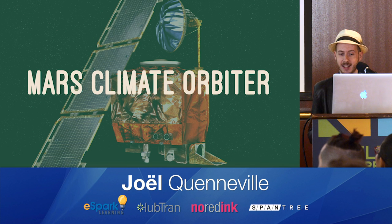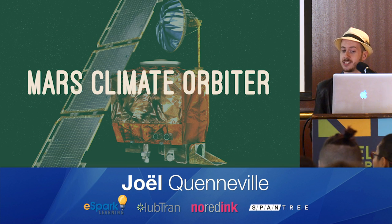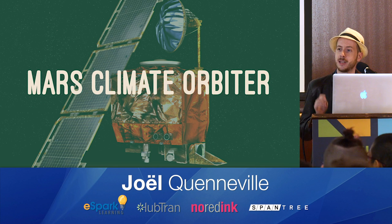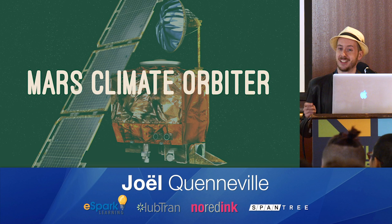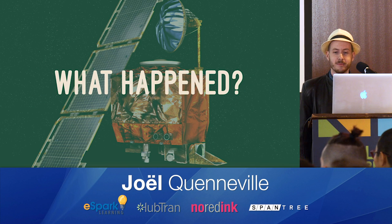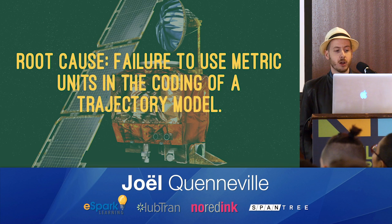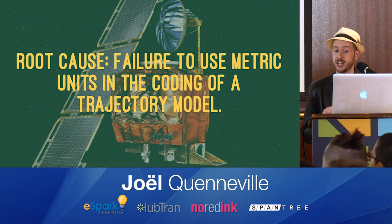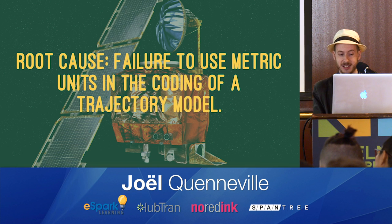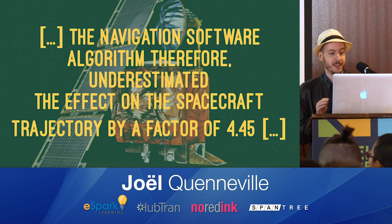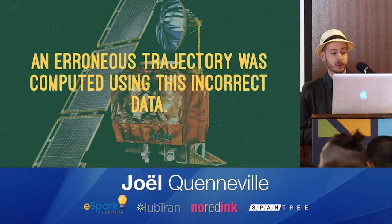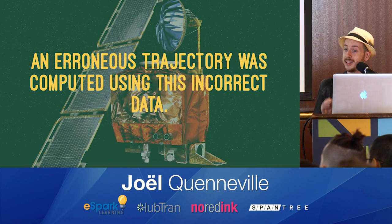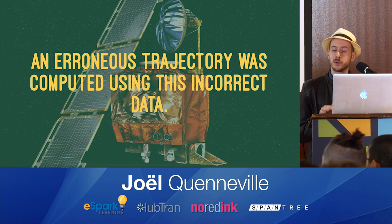So in September of 1999, the Mars Climate Orbiter completed its 266-day journey to Mars. And when I say completed, I mean it crashed into the Martian surface and burned up. We lost a $300 million project and several years of development gone. So what happened? According to the investigation report, the root cause was a failure to use metric units in the coding of a trajectory model. Every other subsystem in this project used metric, but the trajectory calculator used American units. The navigation software algorithm therefore underestimated the effect of the spacecraft trajectory by a factor of 4.45. An erroneous trajectory was computed using this incorrect data. So it's an incredibly expensive mistake to make, but it's also a terribly simple one.